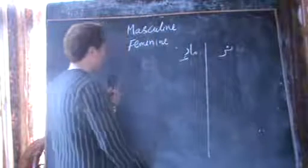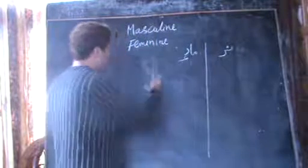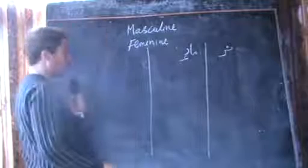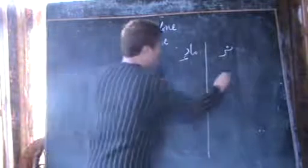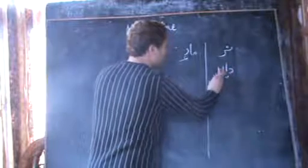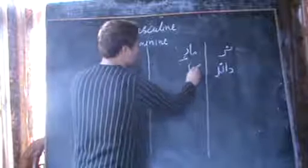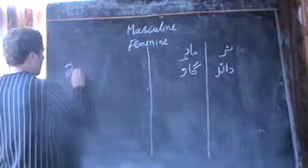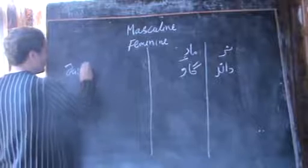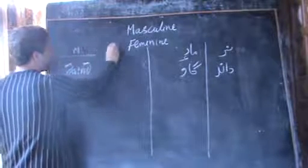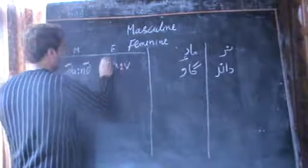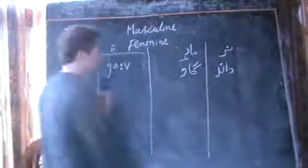Dear students, let me go over some words today — how to write them and what their feminine form is. Some we will write here and some we will cover orally. Like I have one masculine word here: 'dan', and its feminine is 'gal'. This is the masculine and this is the feminine. So this is the phonetic transcription of the word: dan, gal.